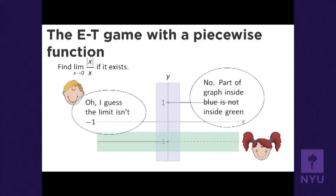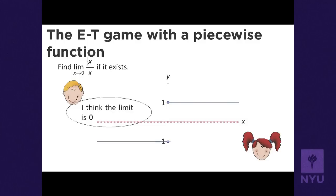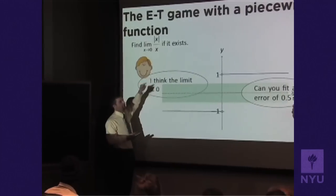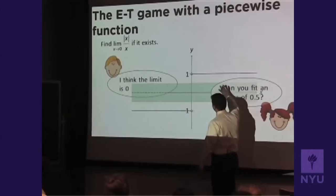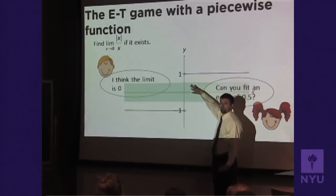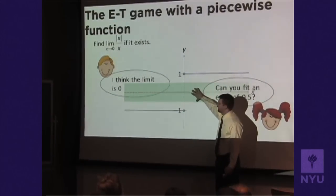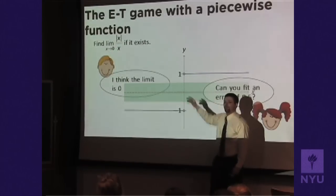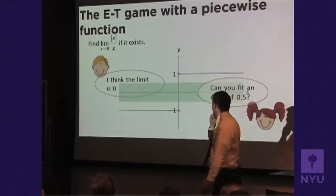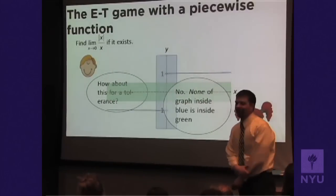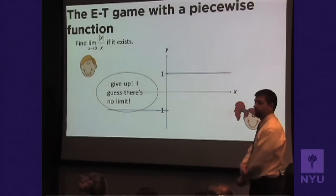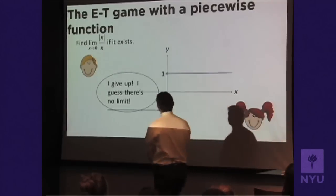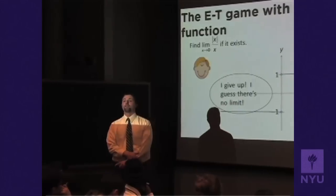Are there any other choices? What about zero? Maybe Dana thinks the limit is zero. If Dana picks zero, Emerson can challenge with some interval, and now there's nothing in the graph inside the horizontal band at all. That's even worse than before. So at this point, Dana really does have to give up and say there is no limit for this function as x goes to zero.